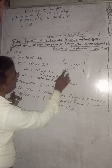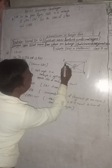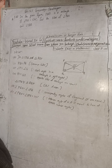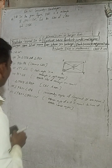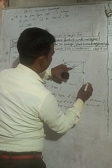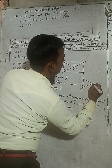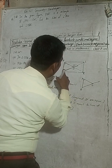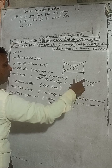In this triangle, the line PQ is extended to form a straight line, making angle POS the exterior angle. So this angle plus this angle — the two opposite interior angles — equals the exterior angle of 124 degrees.